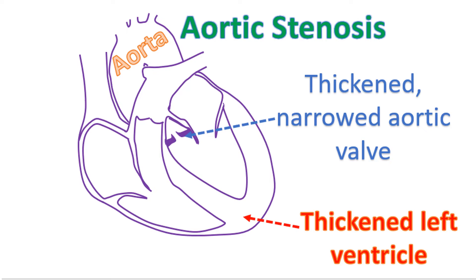Aortic stenosis can cause exertional angina and syncope. Angina is because of increased oxygen demand from the hypertrophied left ventricle in aortic stenosis. The left ventricle gets hypertrophied in an attempt to overcome the outflow obstruction. Exertional syncope is because of peripheral vasodilatation in the setting of relatively fixed cardiac output due to aortic stenosis, producing cerebral hypoperfusion.